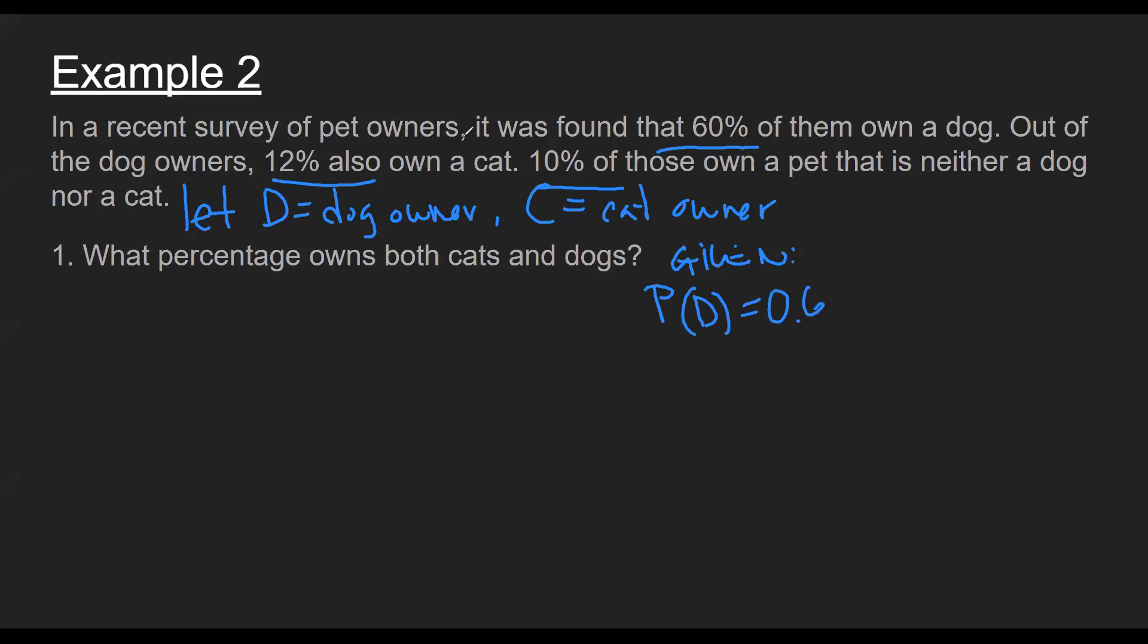And then in this next part, it reads out of the dog owners. So what I noticed there out of these dog owners is that I'm not talking about the entire survey of pet owners, but only dog owners. So that is a conditional statement. So given we're looking at the dog owners, 12% of them also own a cat. And finally, 10% own a pet that is neither dog nor cat. So that means that they do not own a cat.